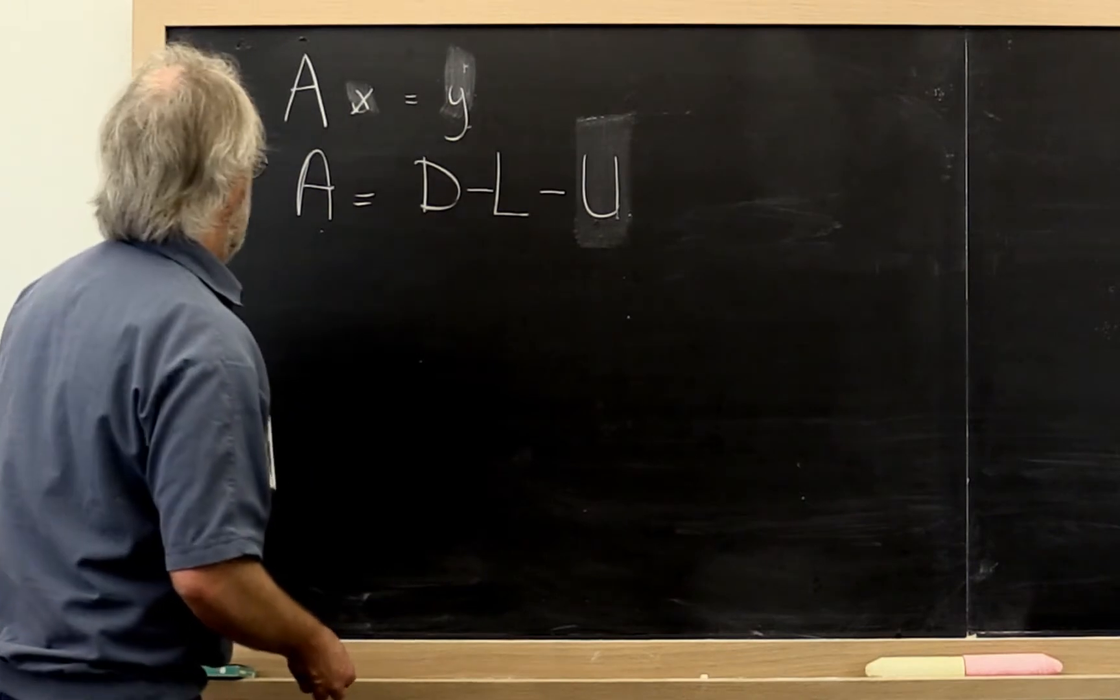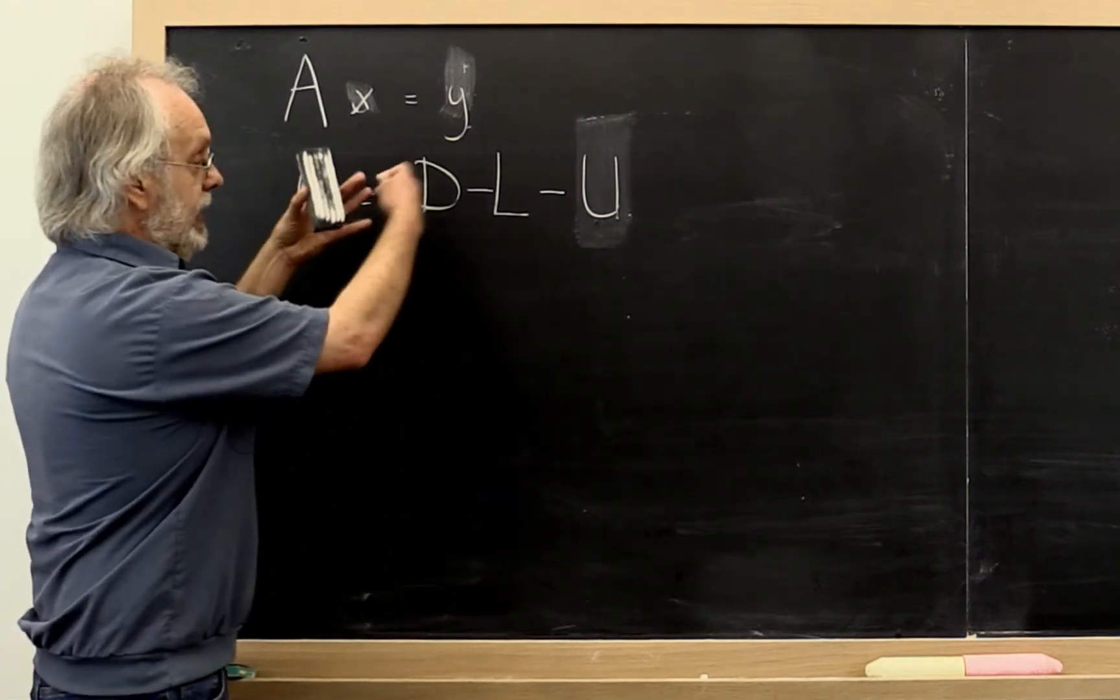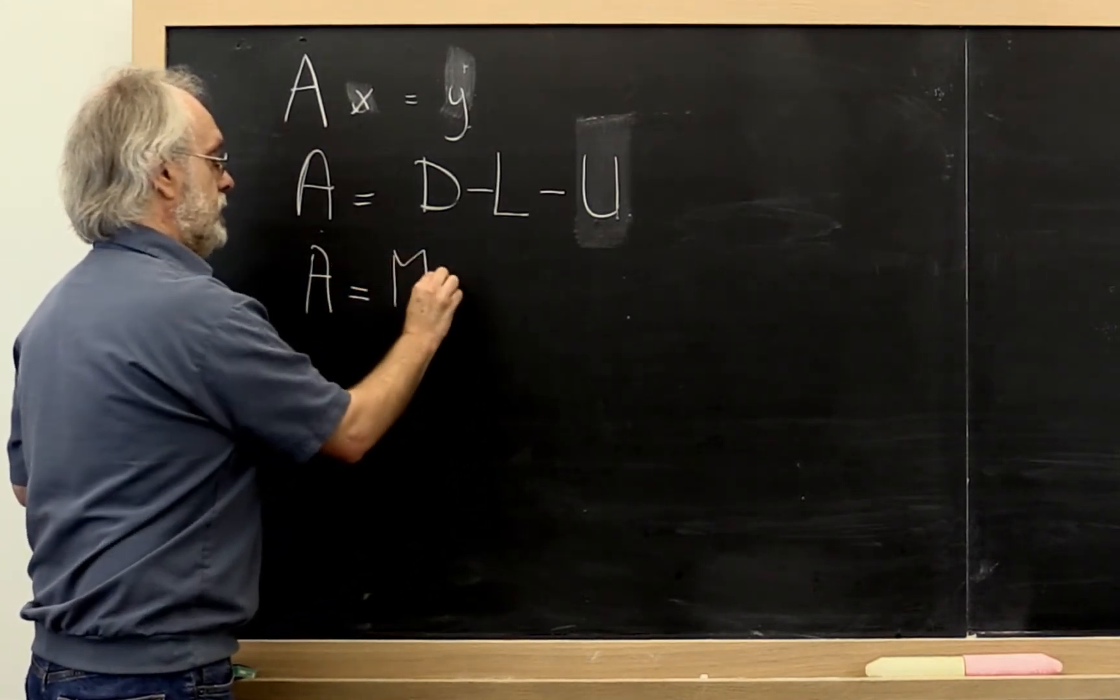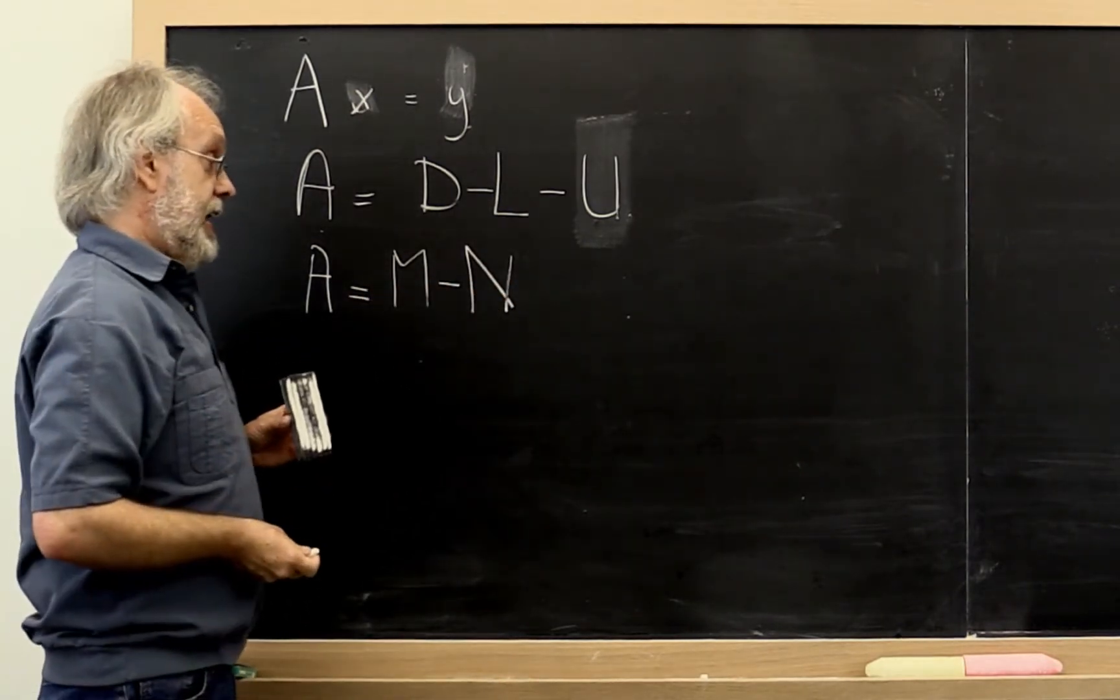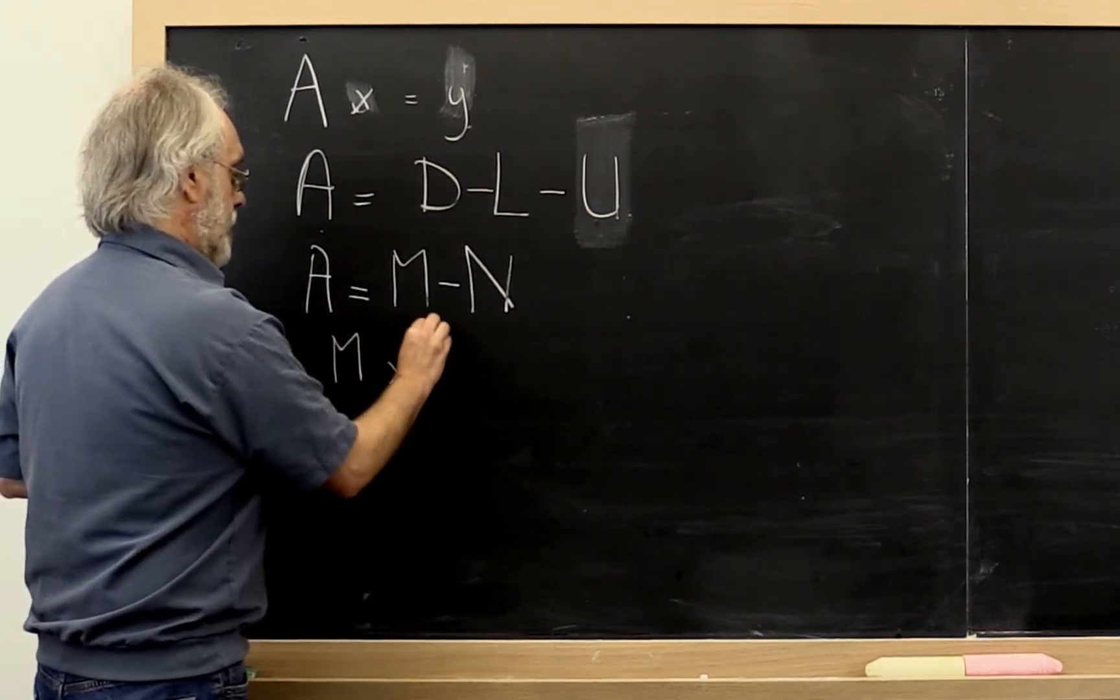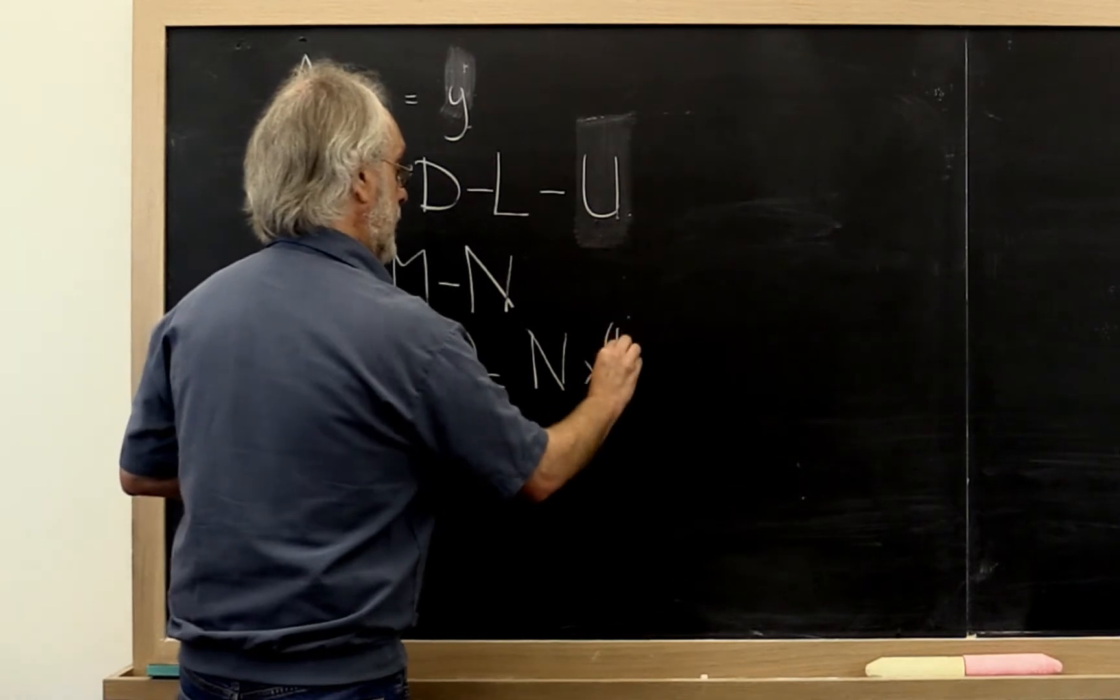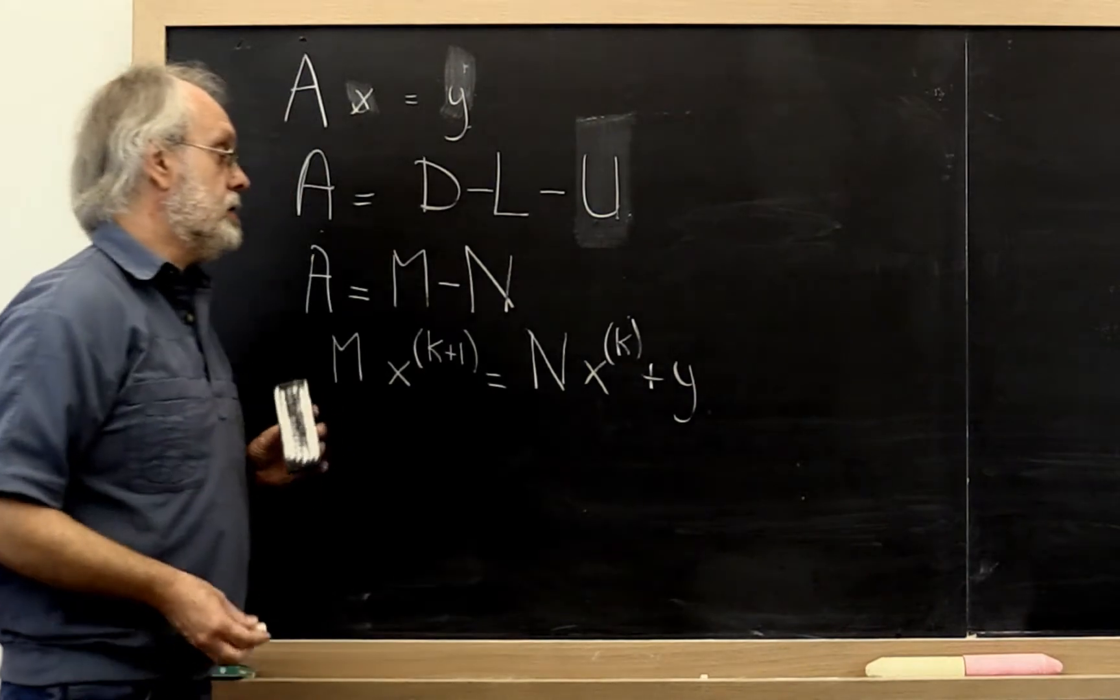So we can then come up with different splitting methods. But actually we can get away from all of these details altogether and simply say, let's do an analysis of what happens when you take your matrix A and you split it into a matrix M and a matrix N. And your method then becomes you solve with M in this way as you've seen before, except now using x and y instead of u and f.